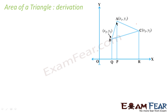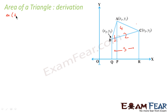What we can do is: if we get the area of this trapezium plus this trapezium, we get the complete area, and from this area if we subtract this trapezium area, we get the area of triangle ABC. So, area of triangle ABC = trapezium 1 + trapezium 2 − trapezium 3. I am expressing the area of the triangle in terms of trapeziums because I know how to find the area of a trapezium.